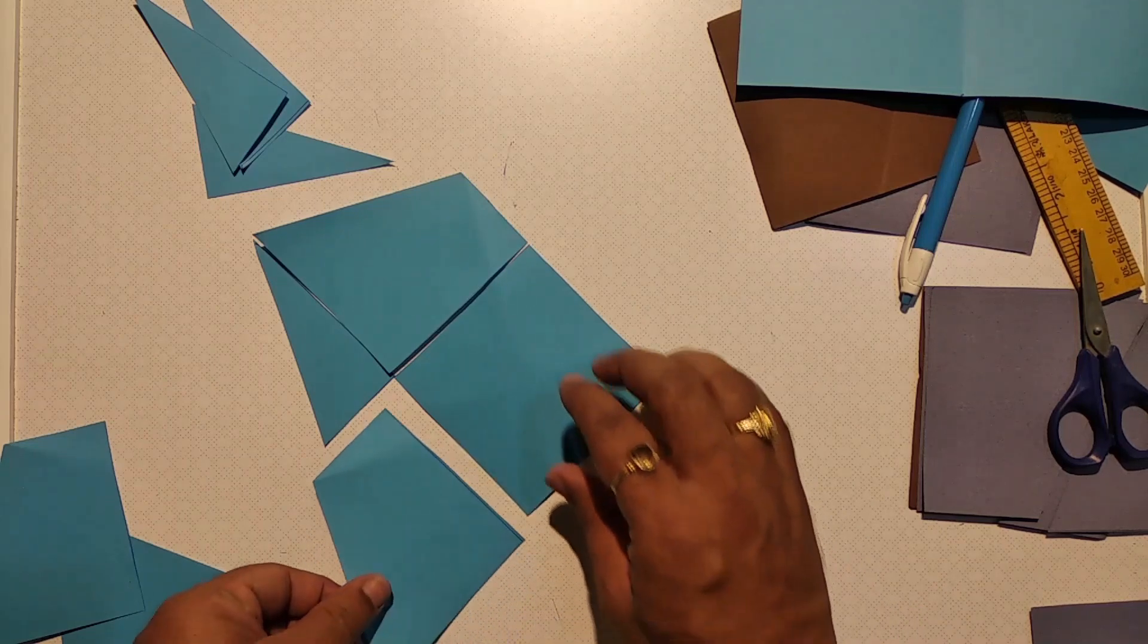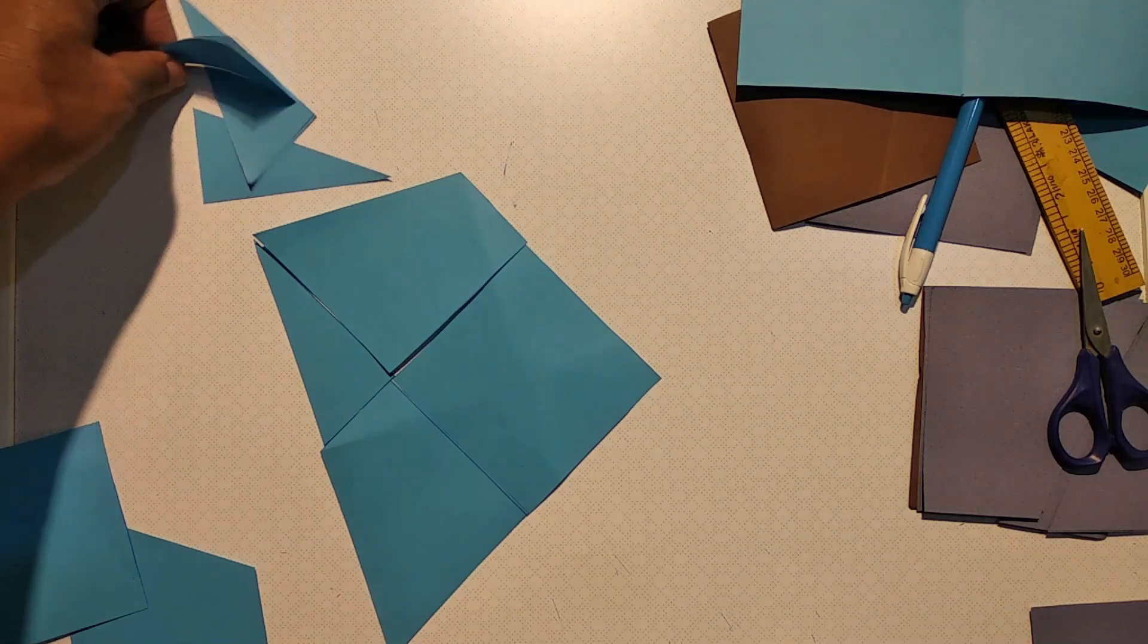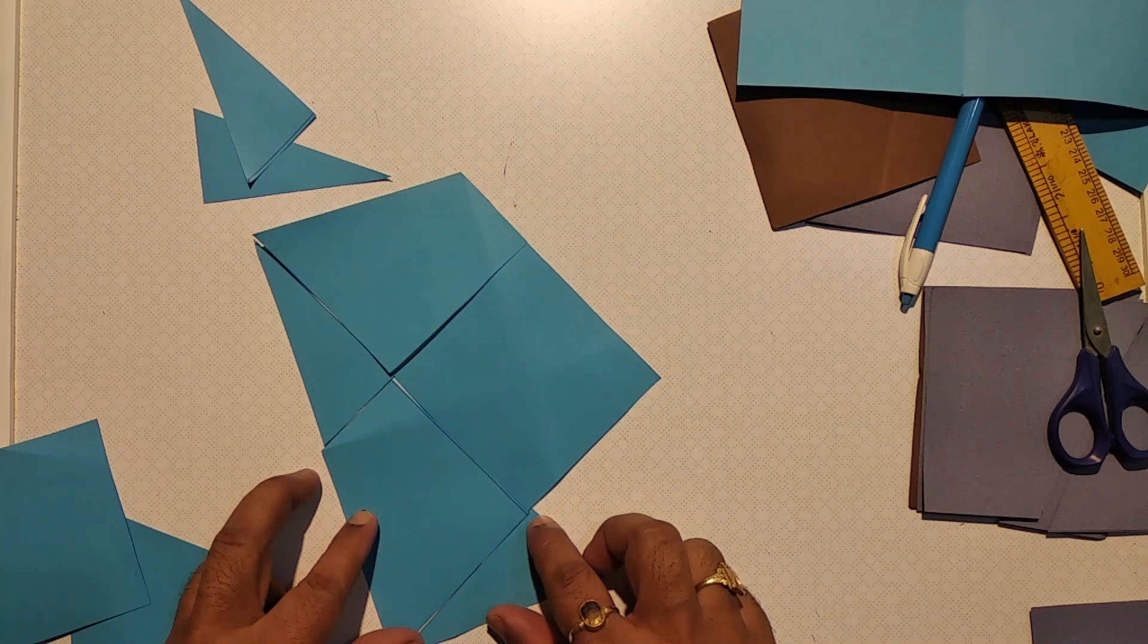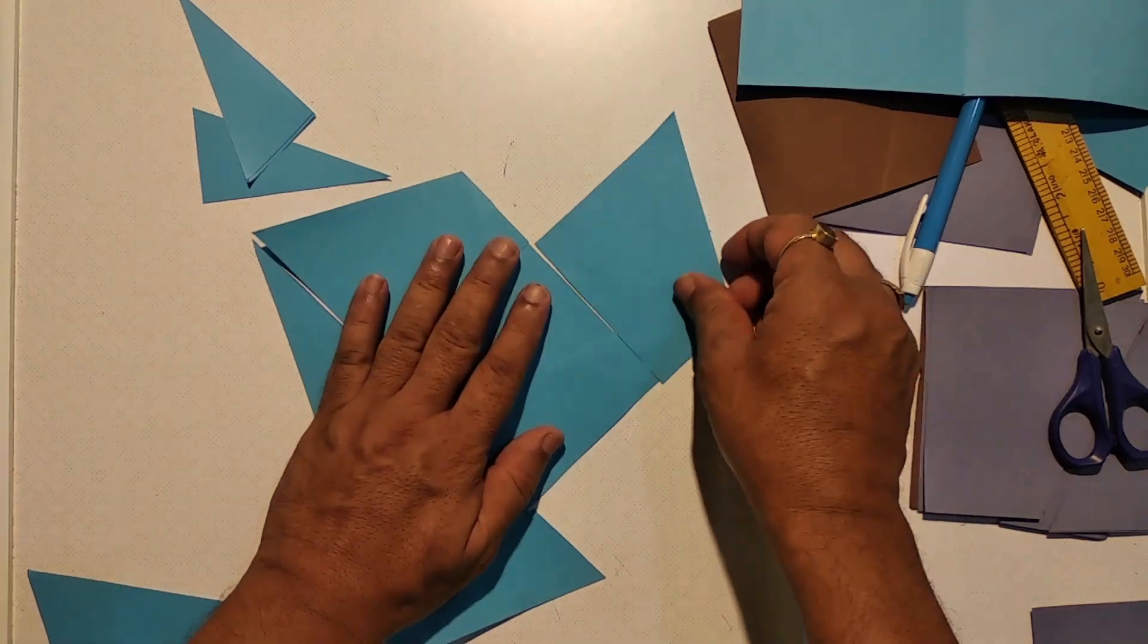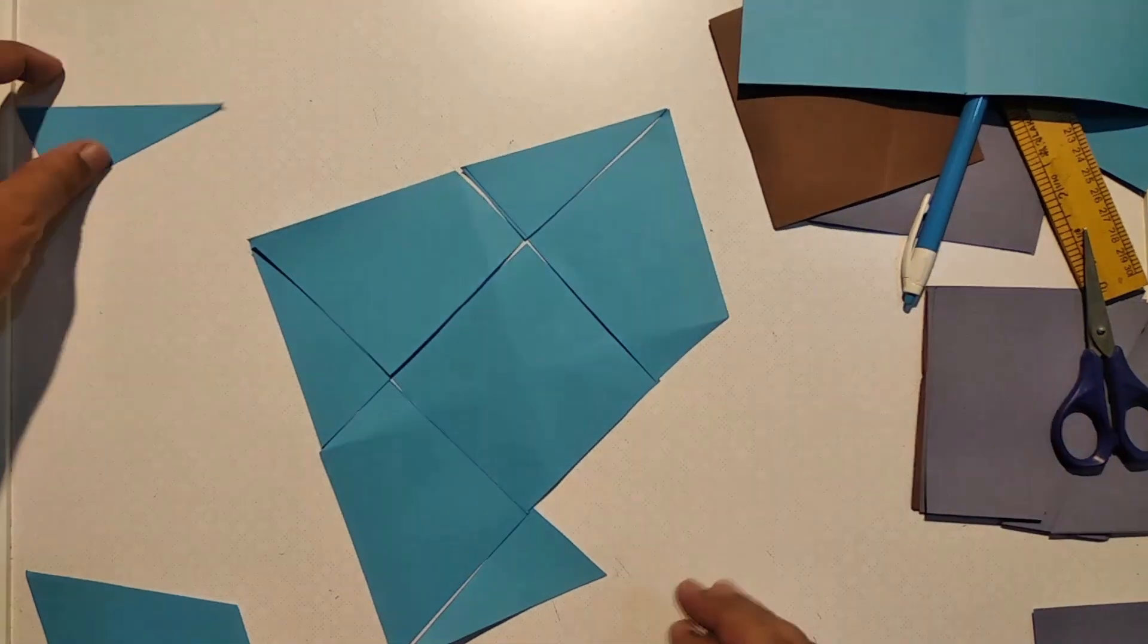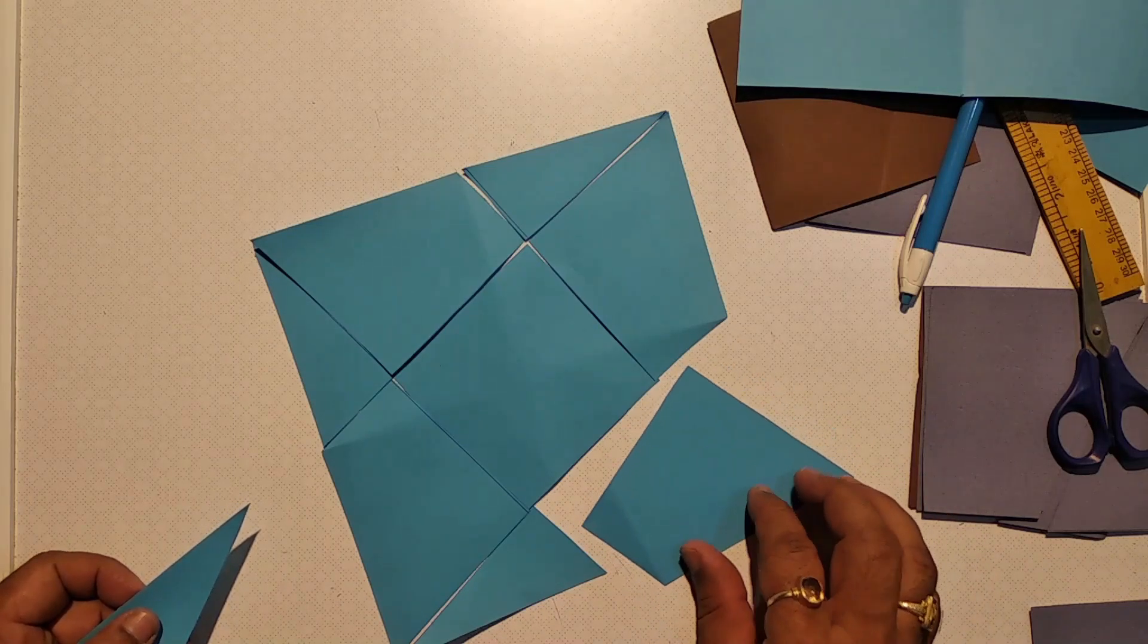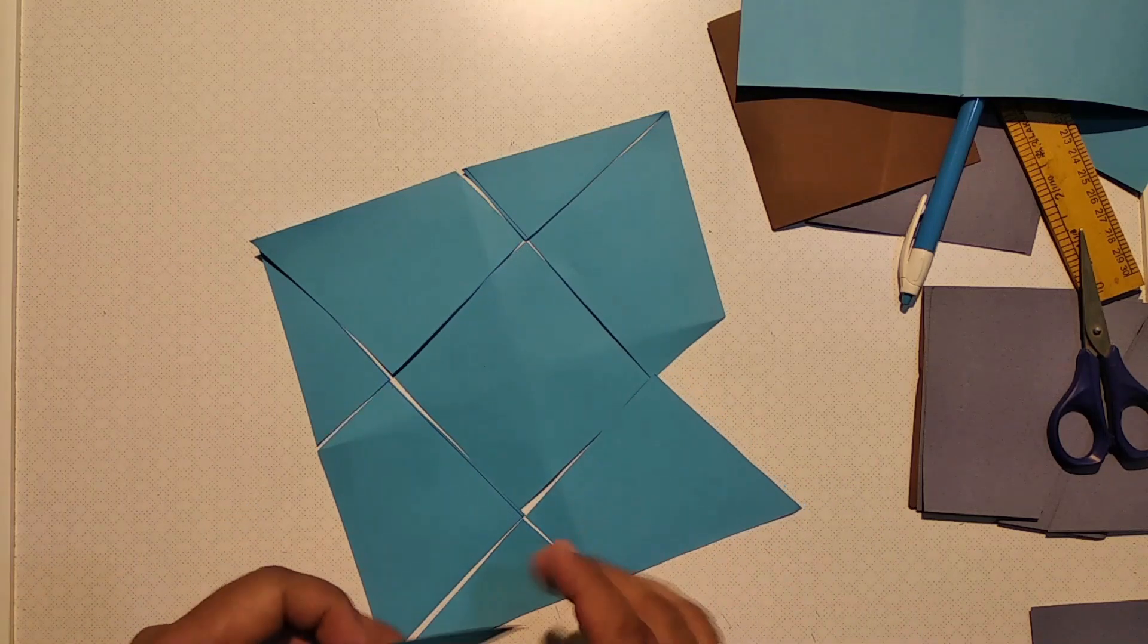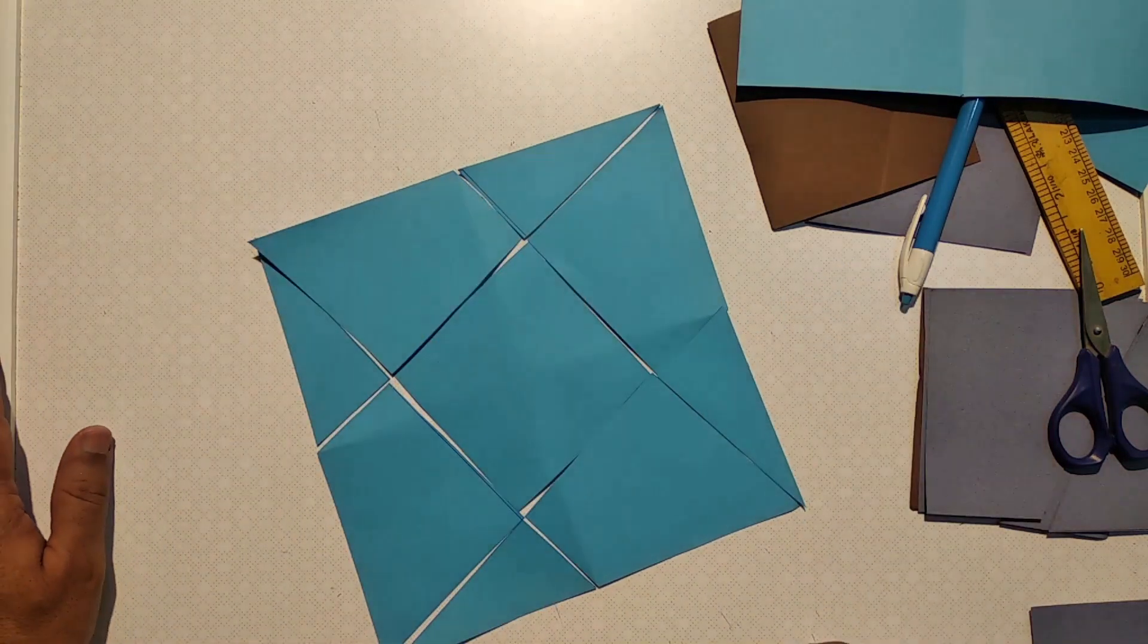Each quarter of this square will have a quadrilateral and a triangle. The quadrilateral. Now the triangle is being placed. This forms the bigger square.